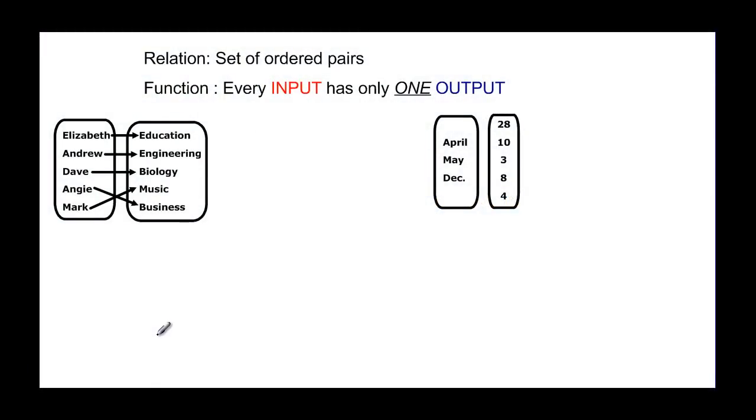It could be x's and y's. It could be first names and last names. Anything that you can make an ordered pair out of.